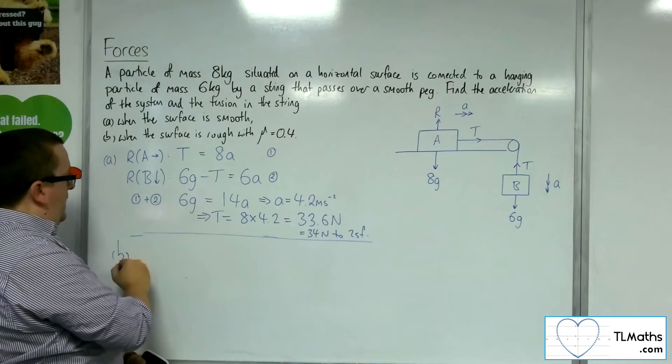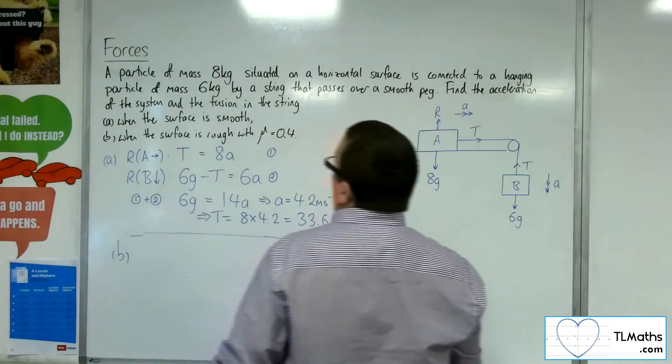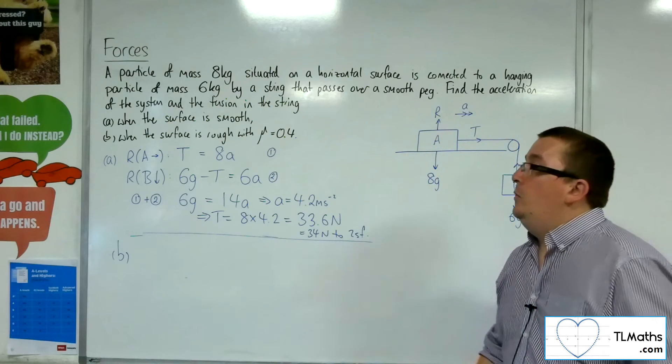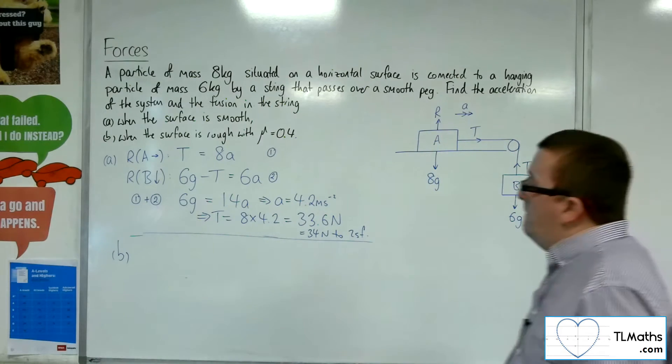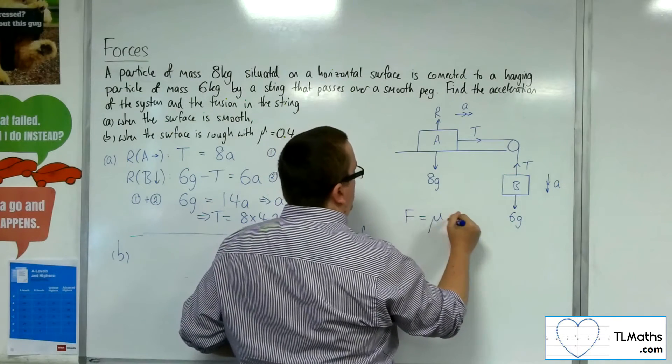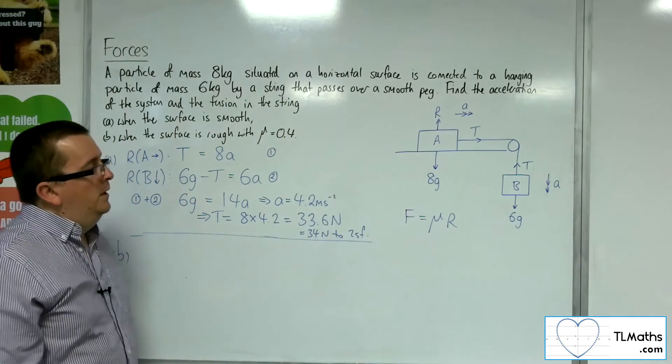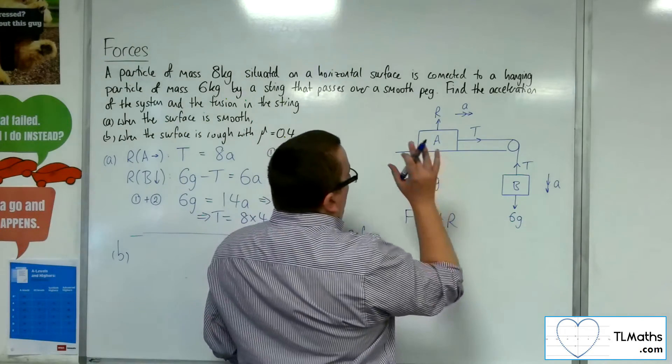Now, part B. Now the surface is rough with mu equal to 0.4. So remember that friction is equal to mu times R.